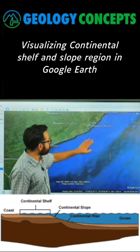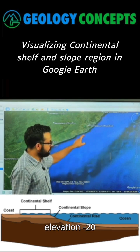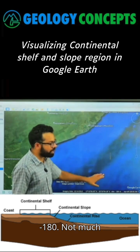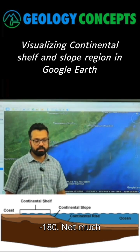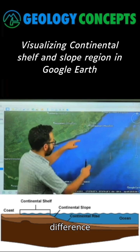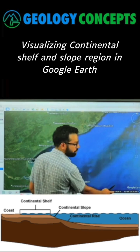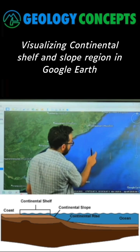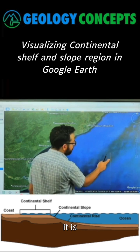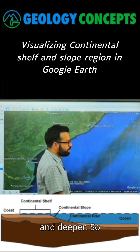What is happening? This place is almost flat, because here the elevation is minus 20, and over here it was minus 1. Not much difference — about 150 meters difference from here to here. Then you look over here, it is going deeper and deeper.